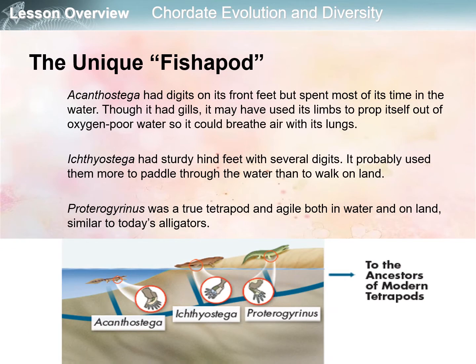Another group of fishapods includes the Acanthostega, Ichthyostega, and Proterogenerus. The Acanthostega already had digits on its front feet but spent most of its time in water. Though it had gills, it may have used its limbs to prop itself out of oxygen-poor water so it could breathe air with its lungs — it had both gills and lungs.